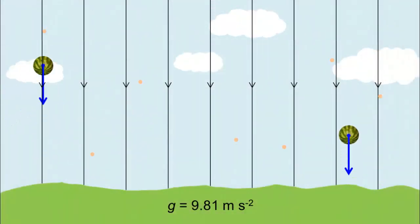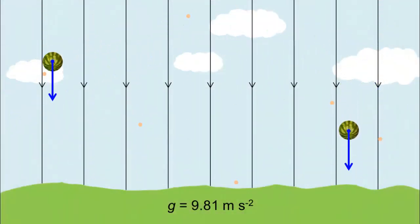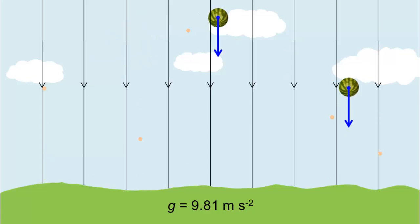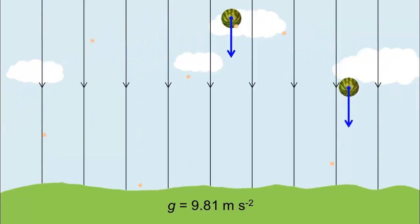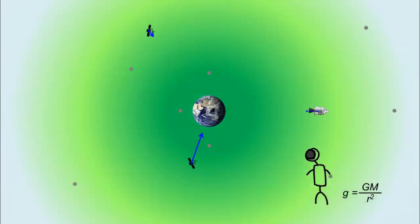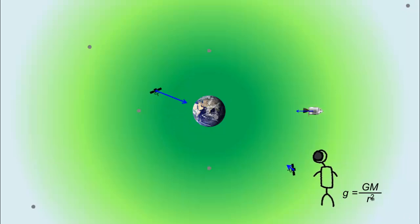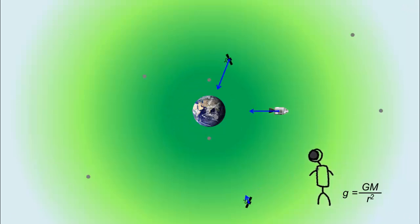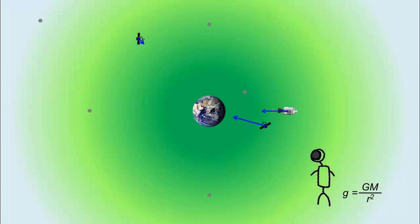Restricted to a localized region, such as the surface of the Earth, the Earth's gravitational field seems uniform, always downward, and the field strength is constant in magnitude. On an astronomical scale, the Earth's gravitational field is clearly non-uniform, is directed radially inward, and the field strength weakens away from the Earth according to the inverse square law.